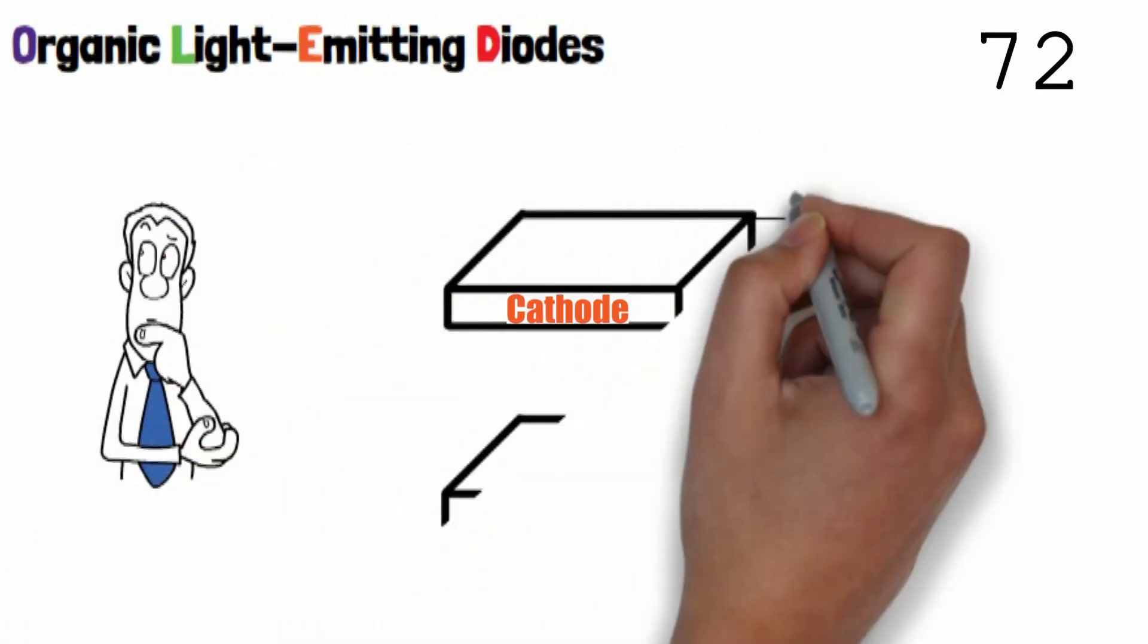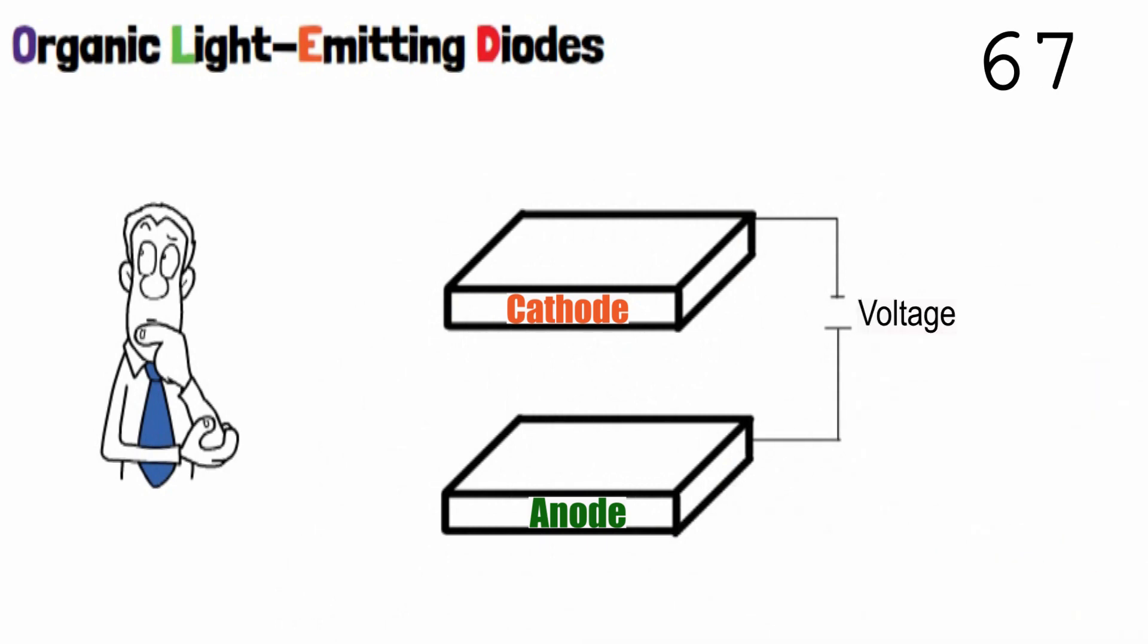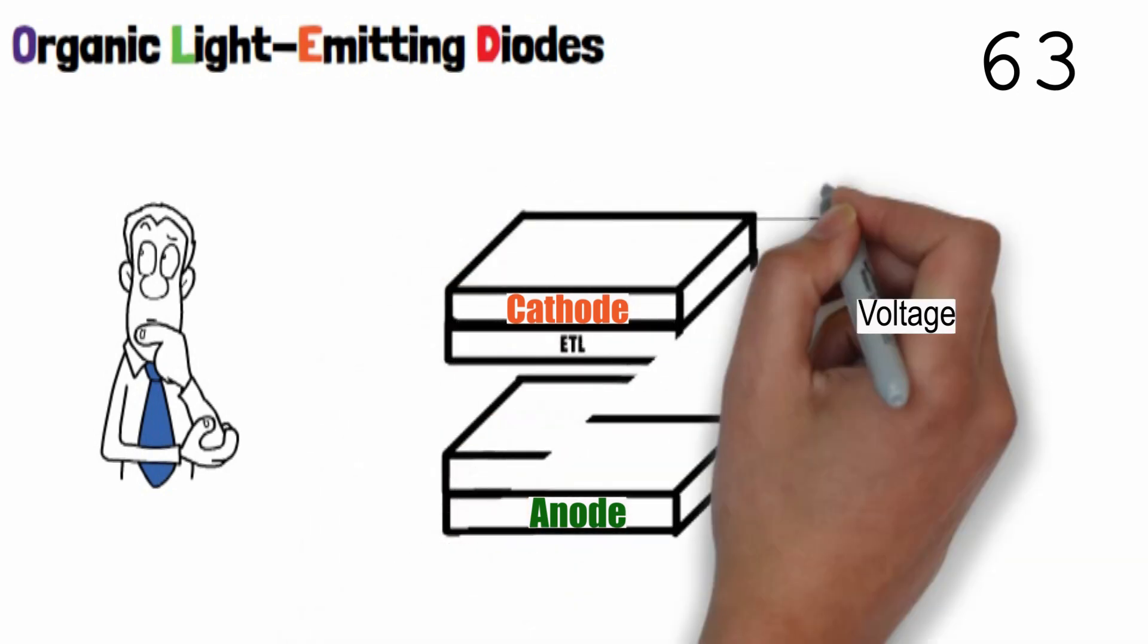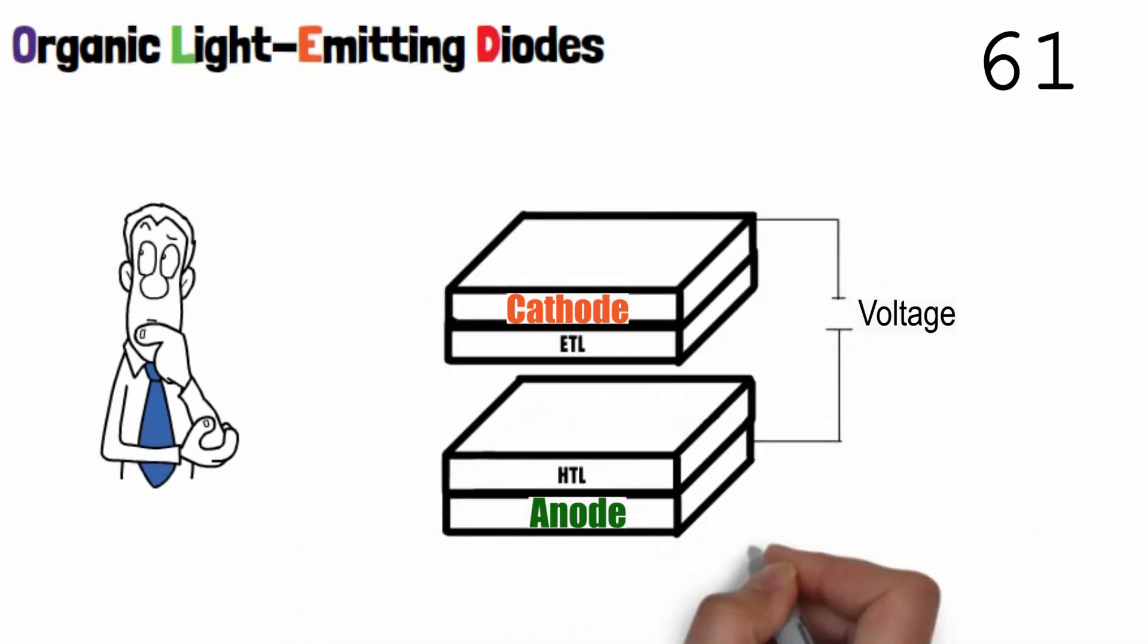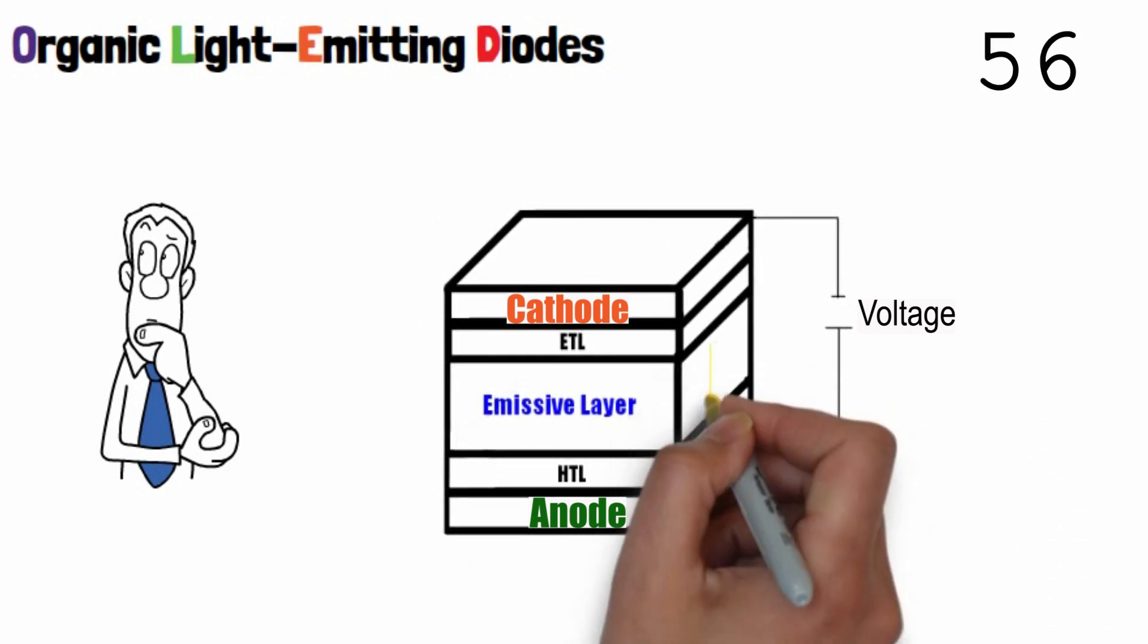OLED consists of several overlapping layers between one cathode and one anode. Inside this stack there are some layers to improve the charge transport. However, the most important layer of OLEDs is the emissive layer.